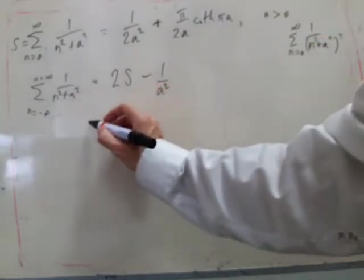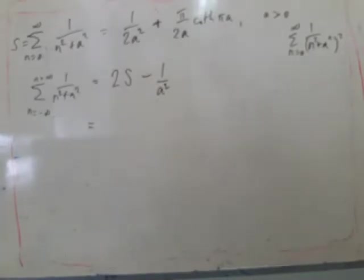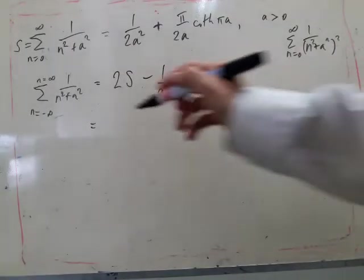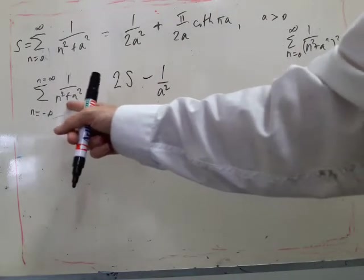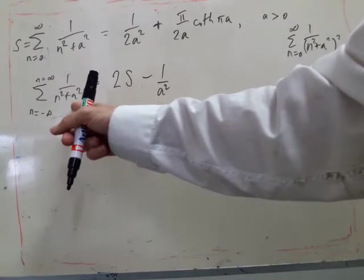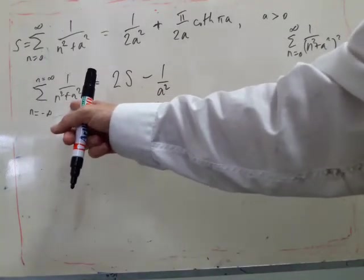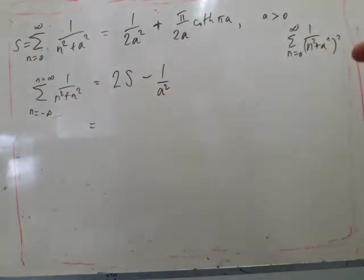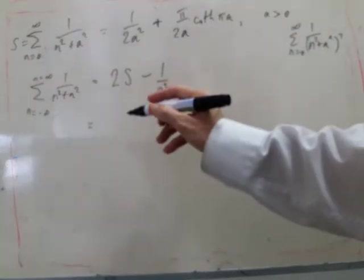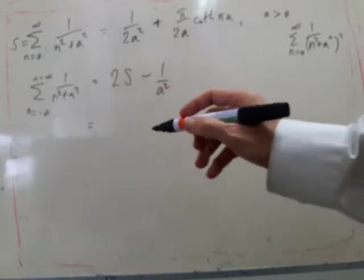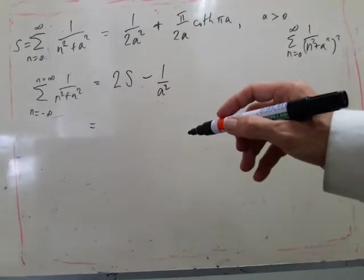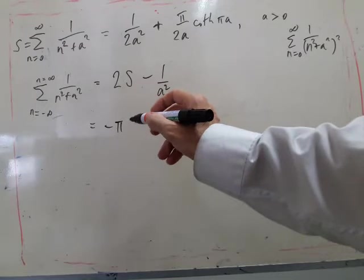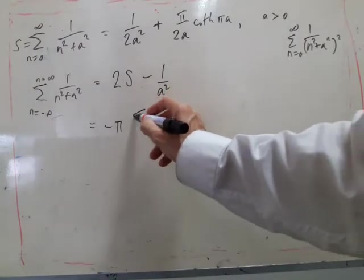According to the formula sheet, first of all, notice that it has simple poles at n equals plus or minus iA. So we just need to end up evaluating the residues at those two points.